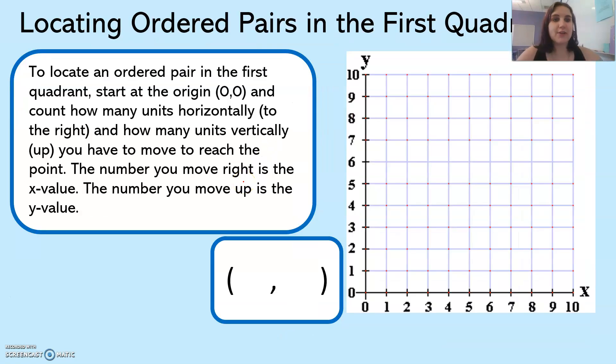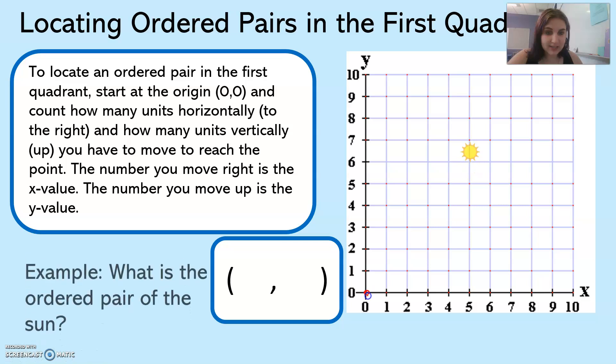So let's try to locate ordered pairs in the first quadrant. Start at the origin which is 0, 0, and count how many units horizontally. So that's to the right. Horizontally is flat like this.